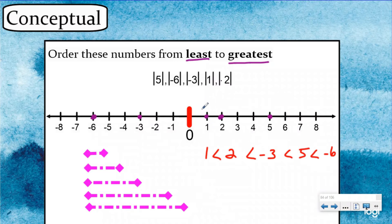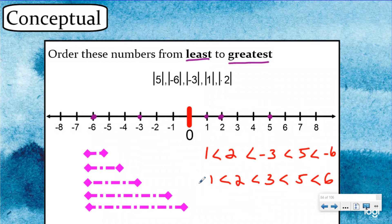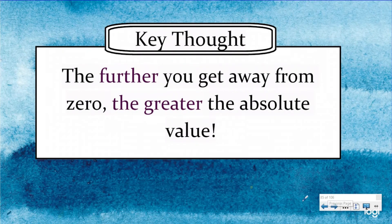The shortcut for this would be to just write the absolute value of each number — so positive one, two, three, five, and six — and then compare the numbers like you have been your whole life. But before we got to that shortcut, we wanted to conceptually show you with this visual model of comparing lines what's actually happening when you're comparing absolute value. The key thought is: the further you get away from zero, the greater the absolute value — no matter if you're going left or right, negative or positive.